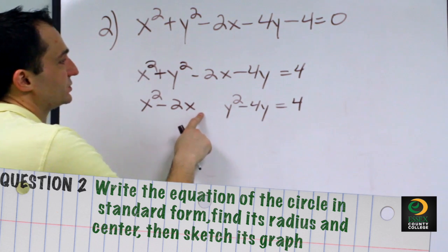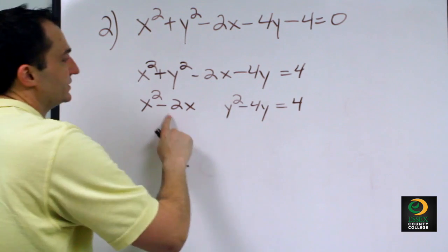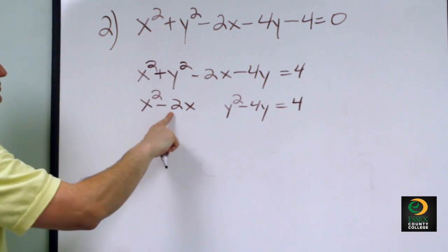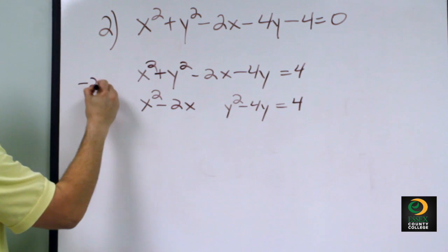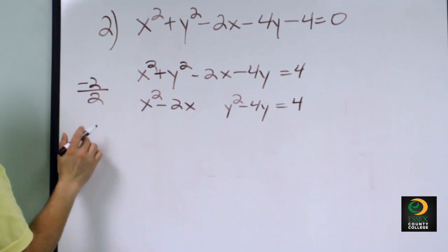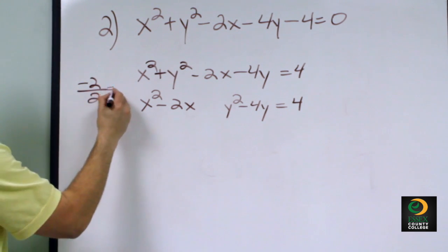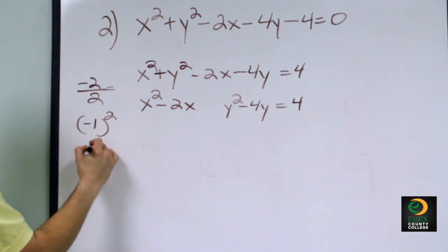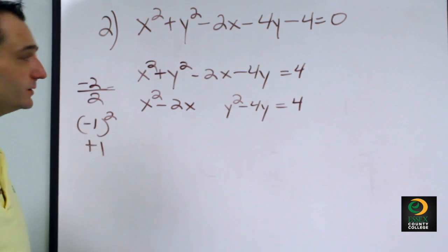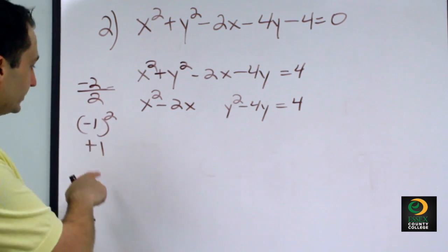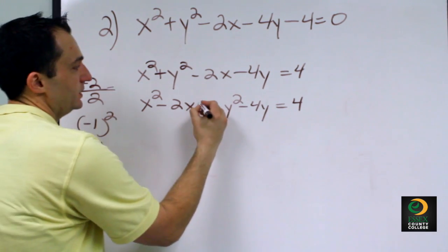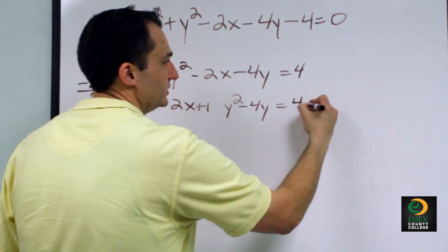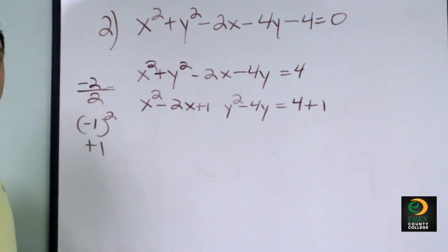We're going to complete the square for each of these — for the negative 2 and the negative 4. For the negative 2, we take negative 2 and divide it by 2, which equals negative 1. We square negative 1 to get positive 1. We add that positive 1 to both sides of the equation.